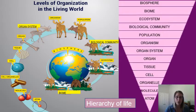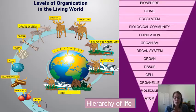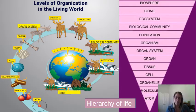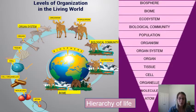Next we have organelles. Organelles are little sub-compartments within a eukaryotic cell — they have certain functions and are kind of like the organs of the cell. But organelles by themselves are not alive. It's not until we put organelles together in a eukaryotic cell — or the important cellular components of a prokaryotic cell — that we get a cell. When we get to this level, this is where life begins. Everything below the cell level is abiotic.